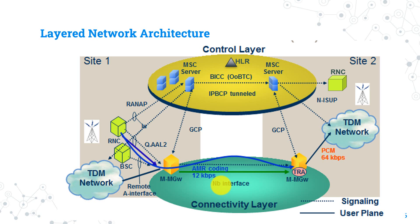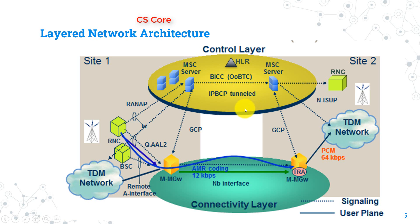The core network in the CS domain consists of the same three layers we talked about before: connectivity layer, control layer, and finally application layer. In the CS core, the term CS means circuit switching, as it will be repeated many times.